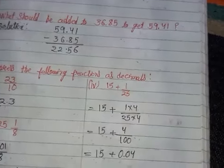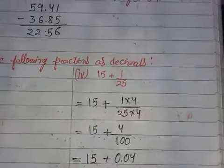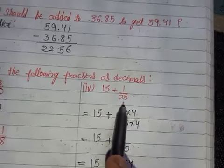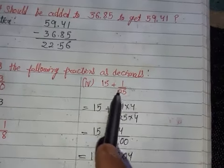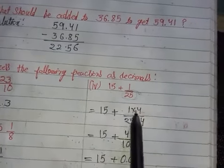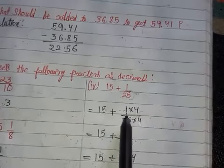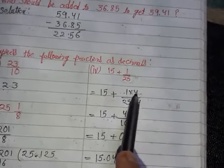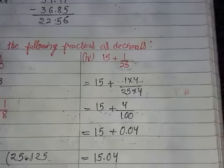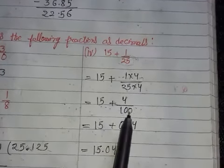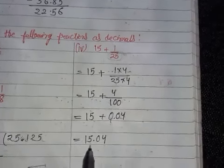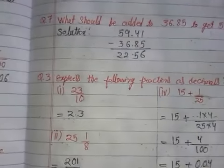Another process — for 15 plus 1/25: the tens multiple of 25 is 100, so we convert by multiplying both numerator and denominator by 4. Multiplying 1 by 4 gives 4, and 25 by 4 gives 100, so 1/25 equals 4/100, which equals 0.04. Adding, we get 15.04. This is a very easy chapter — do it yourself!